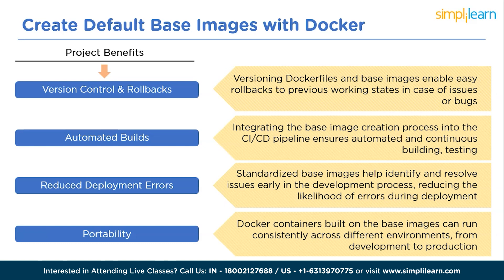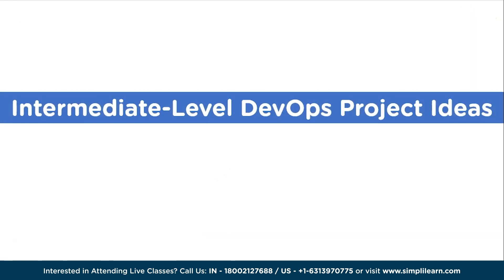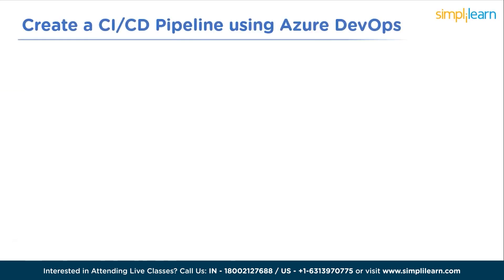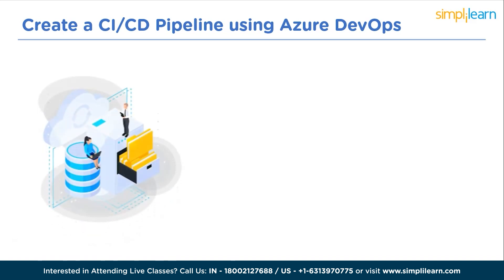For those looking to level up their skills, let's explore some intermediate-level DevOps project ideas. Starting with creating a CI/CD pipeline using Azure DevOps. In this project, we will explore the world of continuous integration and continuous deployment and how it can streamline your software development and deployment processes. First, let's understand CI/CD.